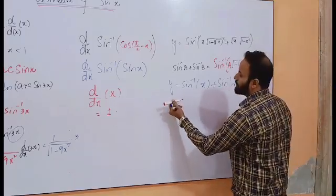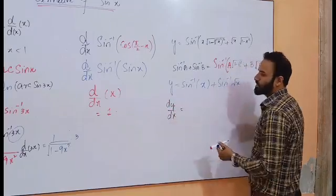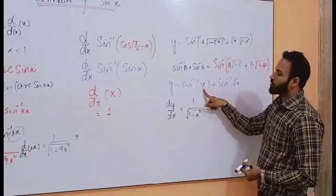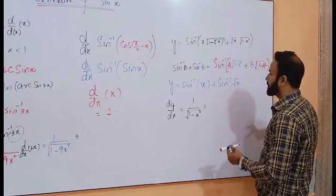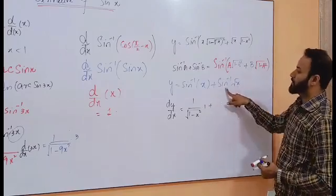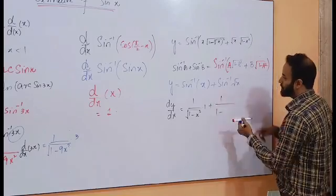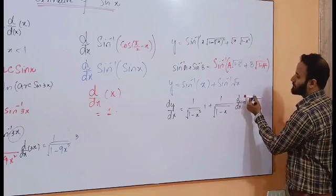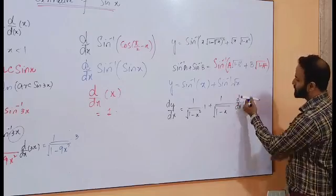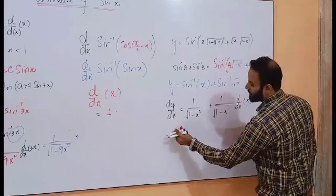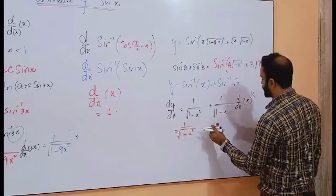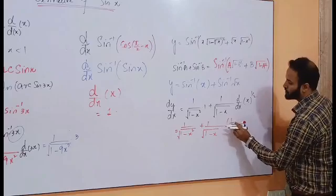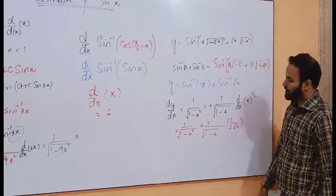You just take the derivative dy with respect to x. The derivative of sine inverse x is 1 over the square root of 1 minus x squared, times the derivative of x which is 1. Plus the derivative of sine inverse of square root x: it will be 1 over the square root of 1 minus x, and the derivative of square root x is 1 over 2 square root x. So the final answer is 1 over the square root of 1 minus x squared, plus 1 over 2 square root x times the square root of 1 minus x.